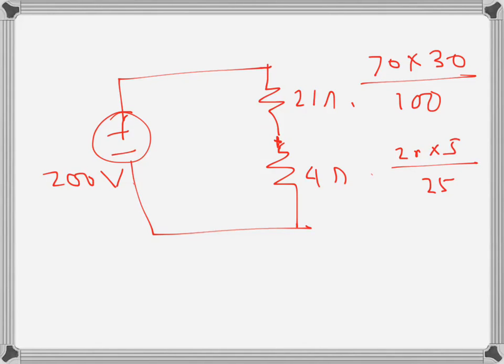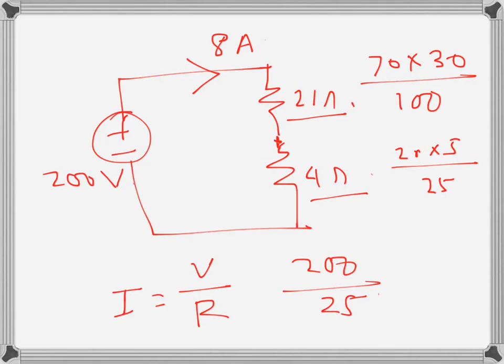That's 200 volts there, so the current is 8 amps because 200 over 21 plus 4, that is 25. I'm just applying Ohm's law: I would be V over R, and R is 21 plus 4, that is 25. So that gives me 8 amps.